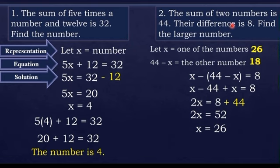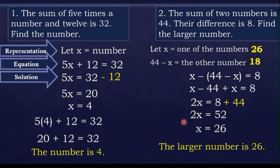We are asked to find the larger number. Looking at our two numbers, which one is larger — x or 44 minus x? Therefore, the larger number is 26.